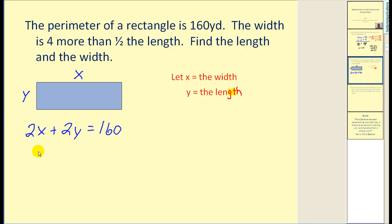When I read the width is, that's telling me that I'm going to have an equation in the form of x equals. Since y is the length, to express 4 more than half, I'll start by finding half of the length. That would be one-half y. But since we want 4 more than that, I'd add 4 to that.